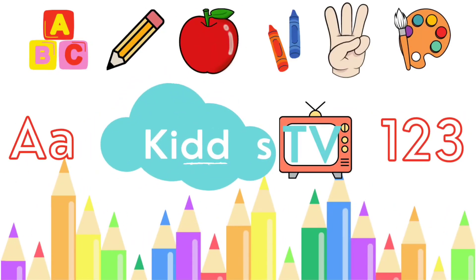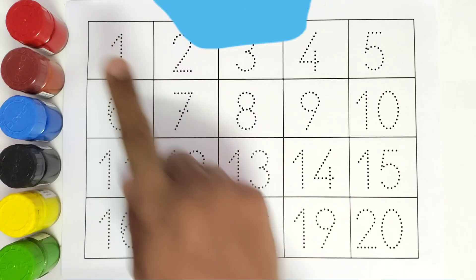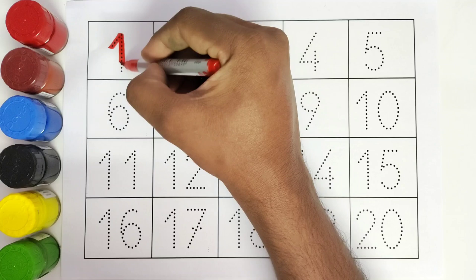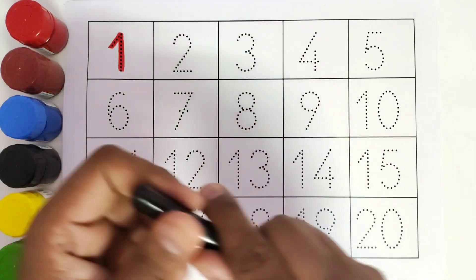Hello kids, welcome to Kiddos TV. Today we are going to learn the numbers. We will be coloring from one to twenty. This is one, number one. This is two.